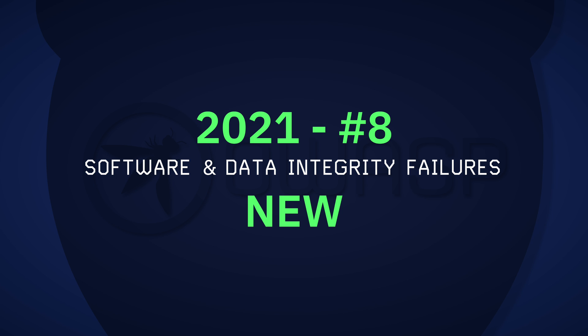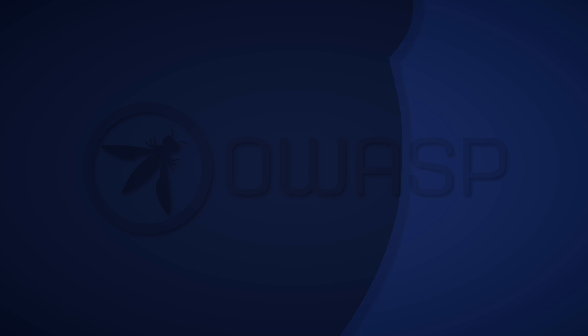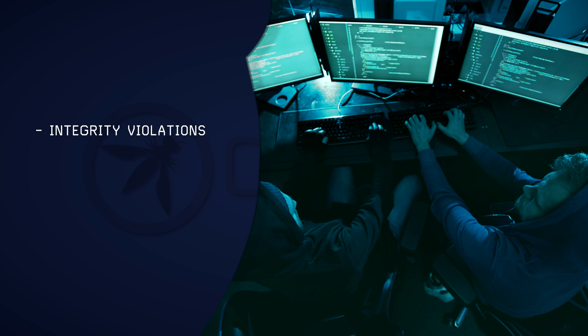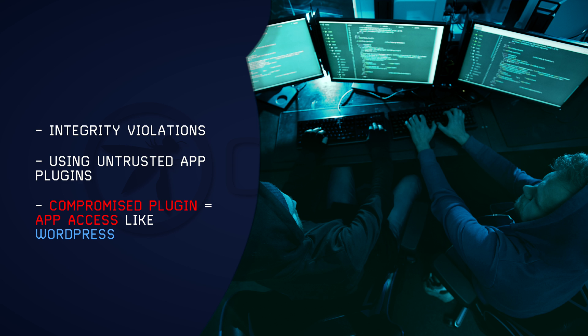Another new category, software and data integrity failures, comes in at number 8, focusing on software updates, critical data, and CI/CD pipelines, and includes insecure deserialization from 2017. This new category relates to code and infrastructure that does not protect against integrity violations. An example of this is where an application, like WordPress, relies on plugins from untrusted sources — one compromised plugin can give an attacker access to your application.